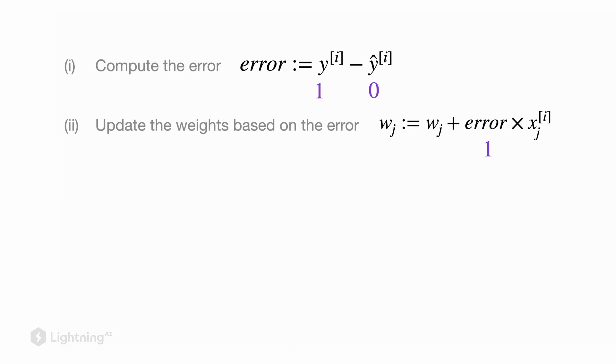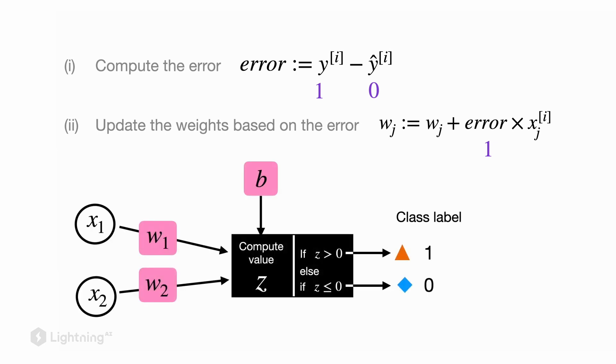Now let's take a look at an example that is a little bit more interesting. Consider the example where the true label is one and the predicted label is zero. In this case, one minus zero equals one, which means the perceptron makes a wrong prediction. So what do we have to do in order to fix that?